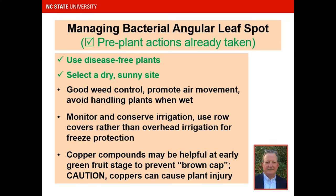For managing bacterial angular leaf spot, pre-plant actions include getting disease-free plants and selecting a dry, sunny site with good drying conditions. Maintain good weed control — weedy middles or weeds in plant holes will hold moisture and worsen the disease. Avoid handling plants when wet, and monitor and conserve irrigation. Row covers are preferred over overhead irrigation for freeze protection, as more water means more problems with bacterial angular leaf spot. Copper compounds can be used at early green fruit stage if you see a lot of leaf spot, but use caution as excess copper can cause plant and fruit injury.